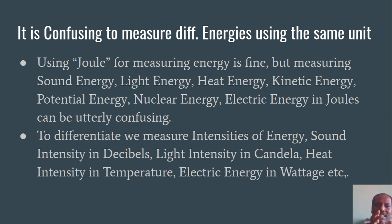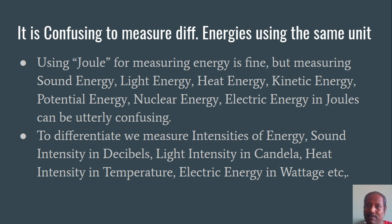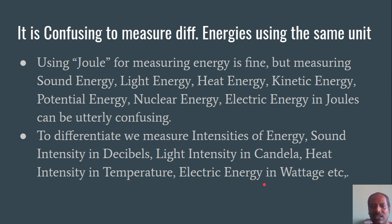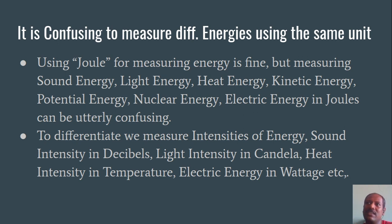Because of this confusion, scientists have developed something called intensities of energy. Instead of simply measuring energy, scientists created dedicated intensity measurement systems. For example, intensity of sound is measured in decibels, light intensity in candela, heat intensity in temperature, and electrical energy in wattage. So even though we have a single unit for measuring energy — joules — we have dedicated intensity measuring systems for sound, light, heat, electrical energy, and so on. This is my slide; do not worry about this.